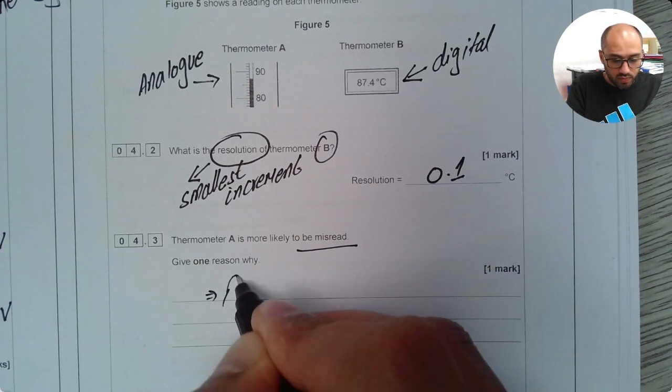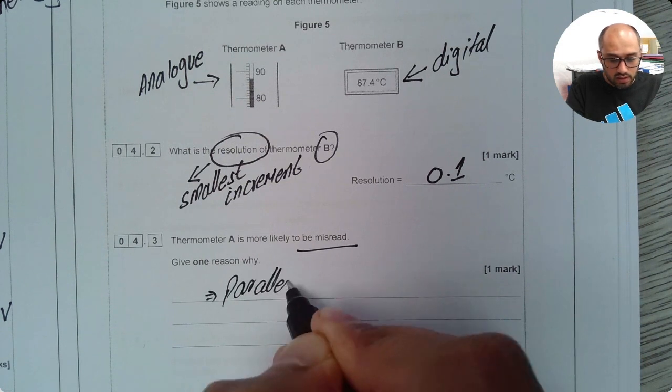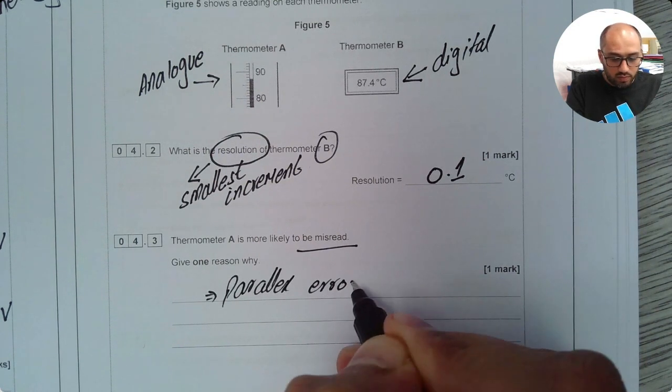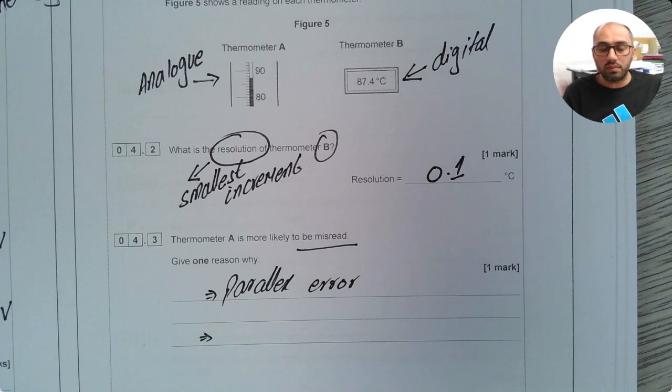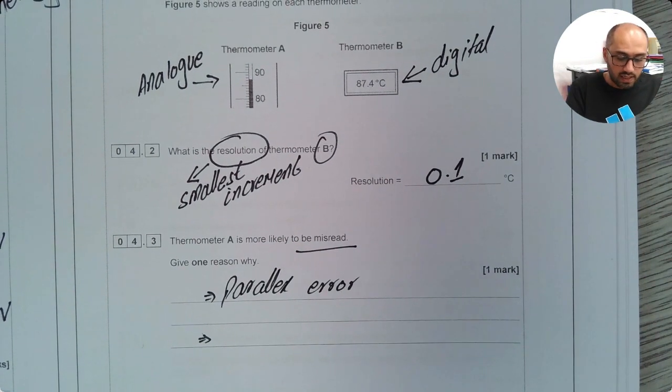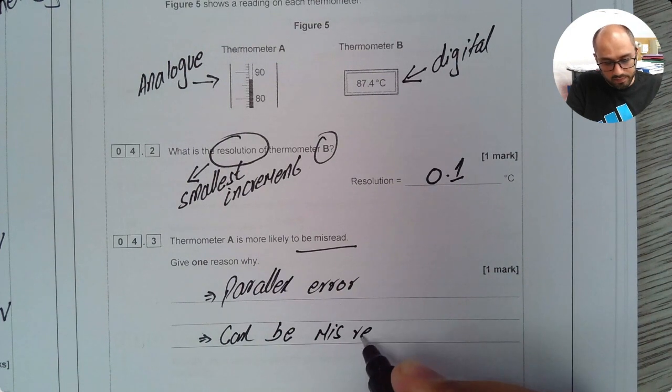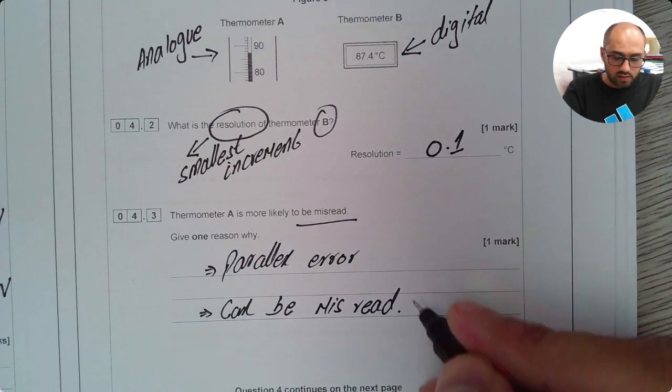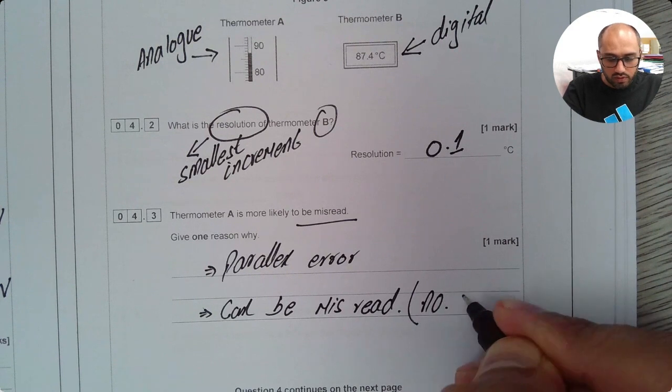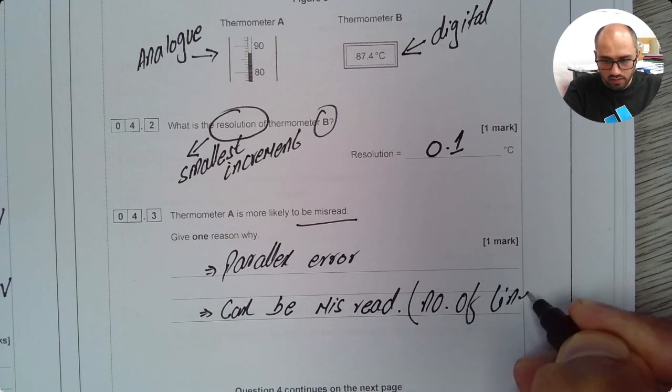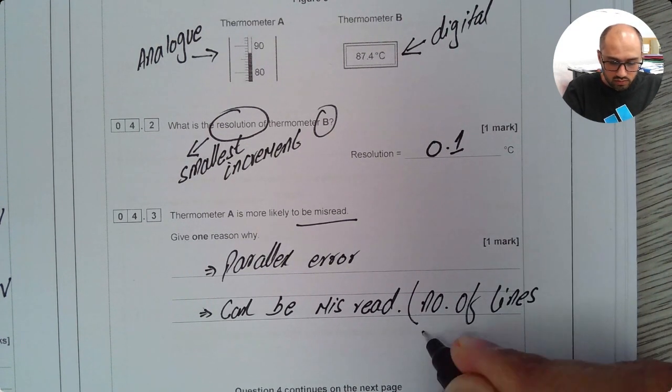So we can say here due to parallax error. But if you want to describe it a bit more we can say can be misread. It means number of lines may be miscounted.